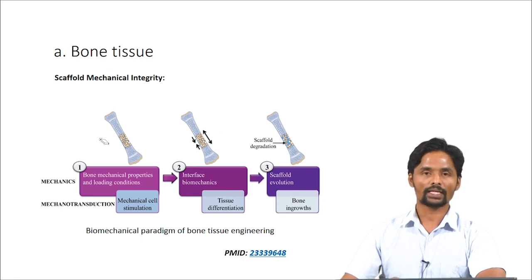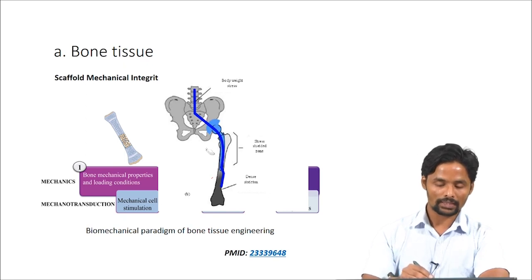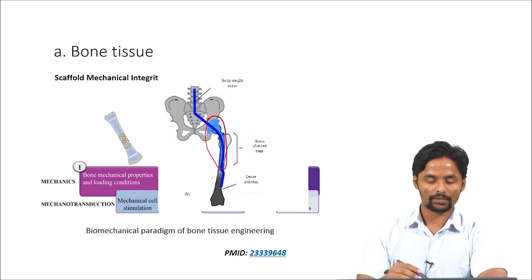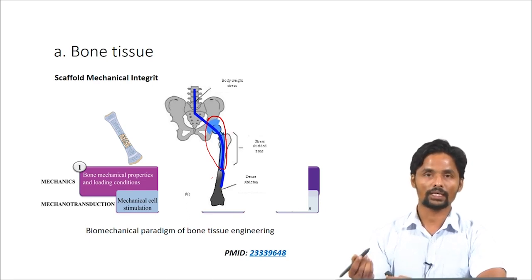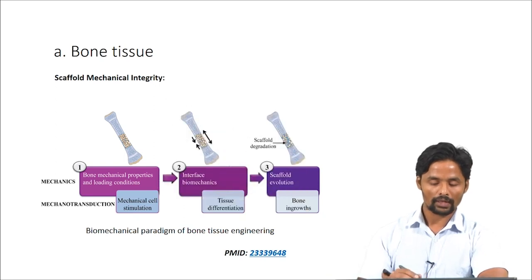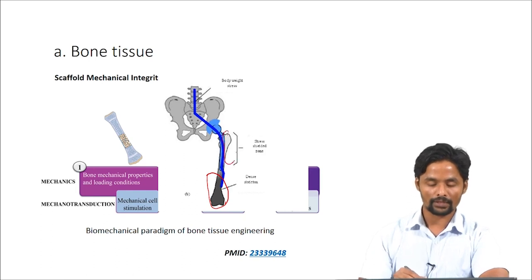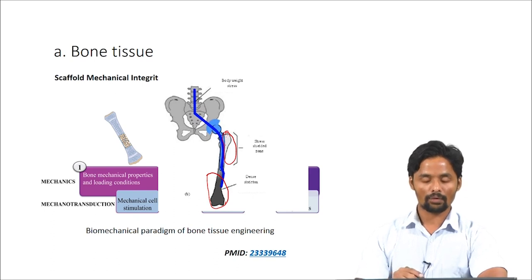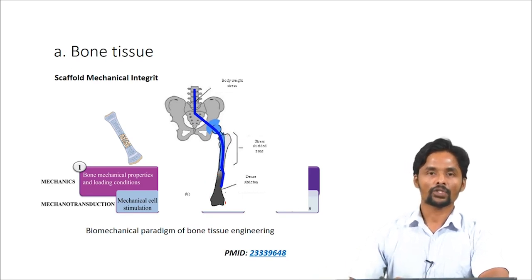What happens in metallic implants is that due to their high mechanical strength, all the load will be taken up by the metallic implant. The region near the metallic implant fails to take the load which is necessary for it to take. The region further from the metallic implant has higher bone mass compared to the region near to the metallic implant, which does not have sufficient bone mass. Hence, eventually the regenerated bone will fail to take up the load, and it is necessary that the scaffold we prepare should not induce the stress shielding effect.